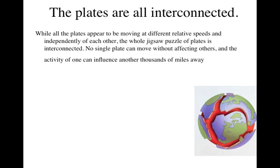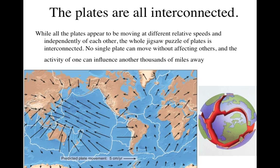If you had an entire jigsaw puzzle and you pulled one end of it, the entire jigsaw puzzle would come with it. So here are all the plates and they are moving. If this one right here, the Pacific plate, is moving this direction and this one is moving this direction, then something is going to happen in between. And this one can't move this way without affecting this one here, which in turn affects this one here and so on and so forth. This is a big chain reaction.